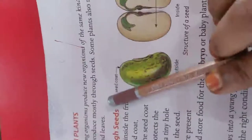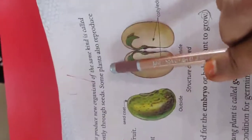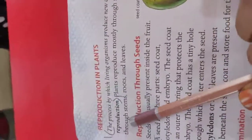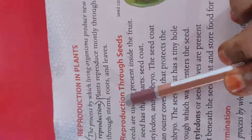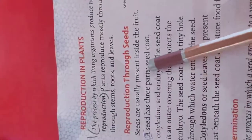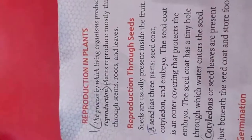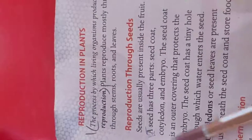Plants reproduce mostly through seeds. Some plants also reproduce through stem, roots and leaves. Seeds are usually present inside the fruit.